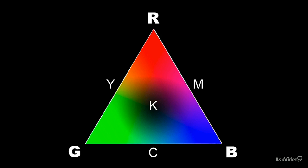Now while this bigger triangle shows you all the RGB colors, this inner triangle shows you the colors you can mix with CMYK. And obviously there's a big difference between the two.